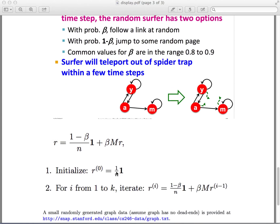So the transition equation becomes r equals 1 minus beta over n times matrix 1 plus beta times M times r. The matrix 1 is an n by 1 matrix and each element in the matrix equals 1.